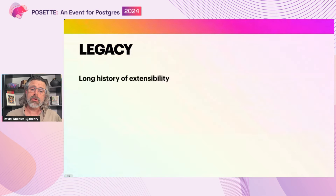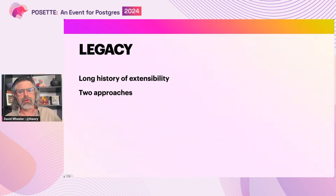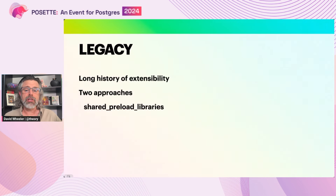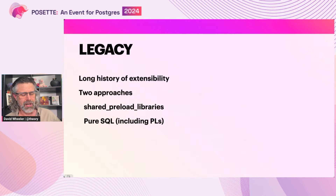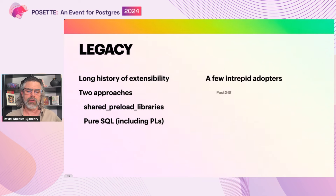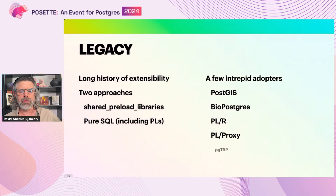Let's go back to the beginning. Postgres has a long history of extensibility. In the old days, there were two basic approaches to extending Postgres without forking it. One was loading dynamic shared objects into the shared preload libraries configuration variable. And the other was pure SQL extensions, procedural languages, and SQL features used to create objects. There were quite a few intrepid early adopters in those years, including PostGIS, via Postgres, PLR, PLProxy, PGTap, and more.